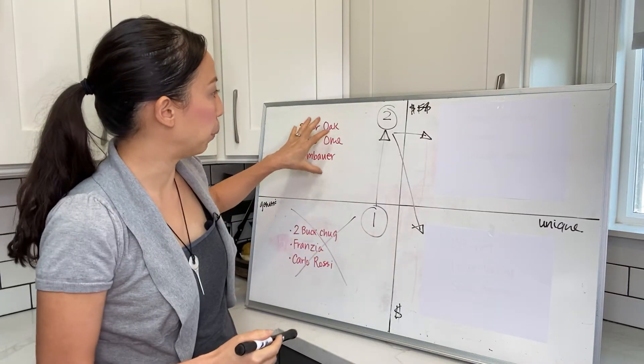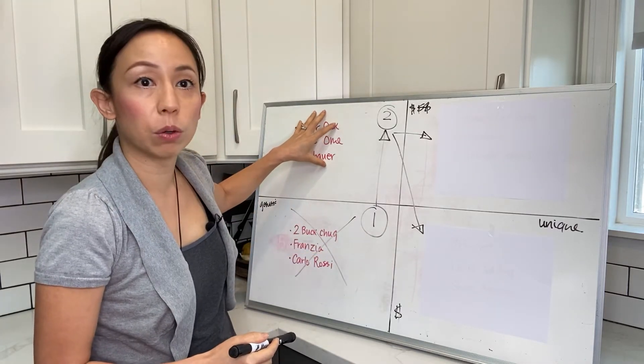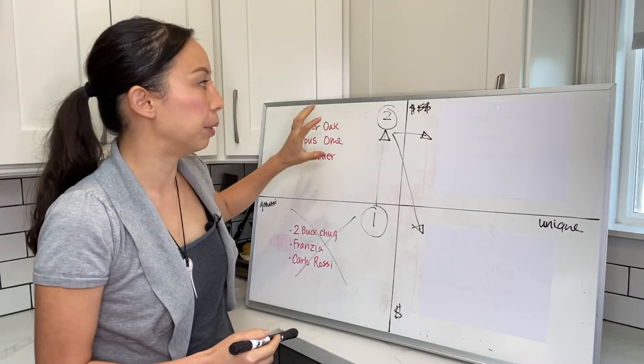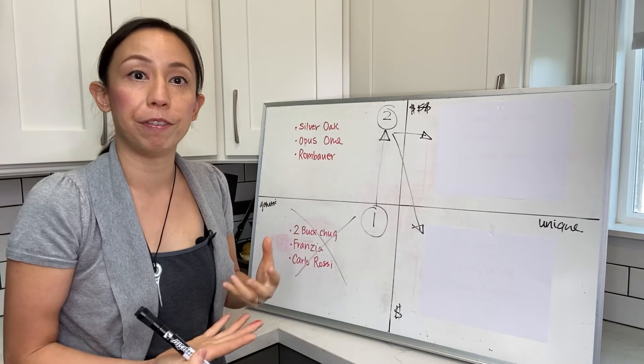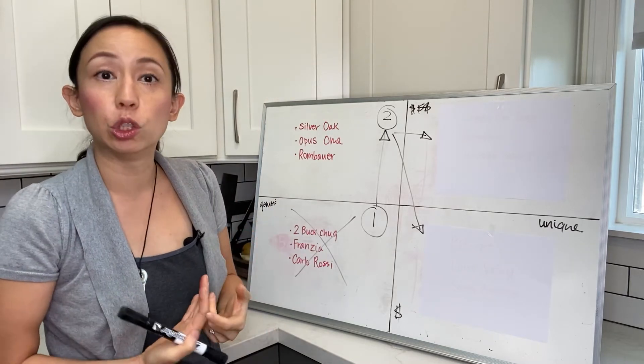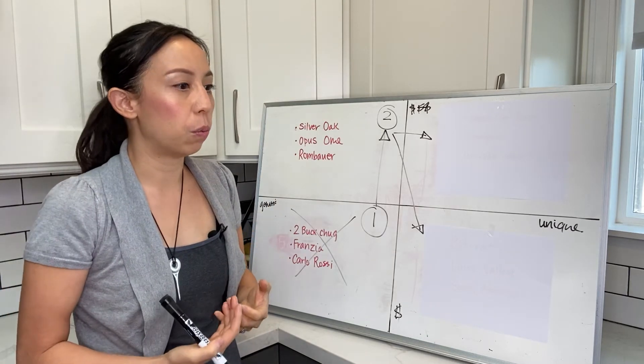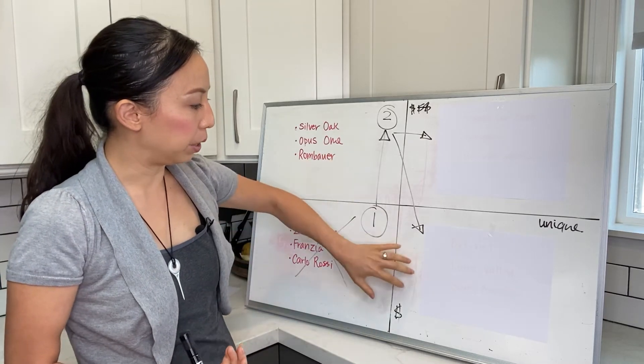The next category is wines you can find pretty much everywhere but are better quality. They're starting to understand, 'Wow, wine can be very expressive and enjoyable.' Then they want to know what else is out there, so we go into the other category here.